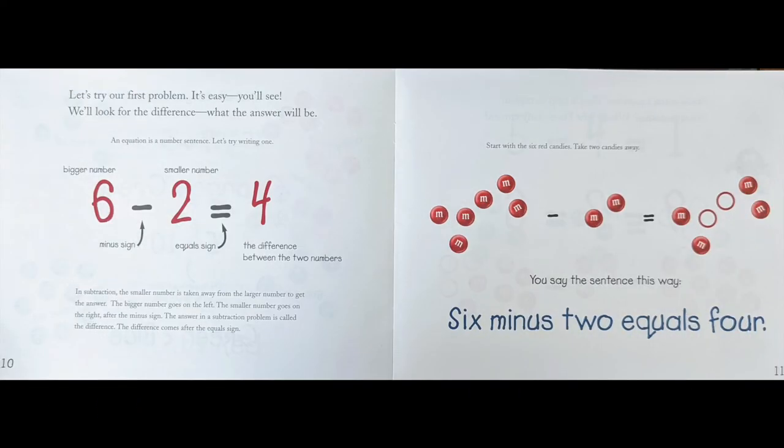Let's try our first problem, it's easy you'll see. We'll look for the difference, what the answer will be. An equation is a number sentence. Let's try writing one: 6 - 2 = 4. Six is the bigger number, two is the smaller number. This is the minus sign, and this is the equal sign. The answer is the difference between two numbers.